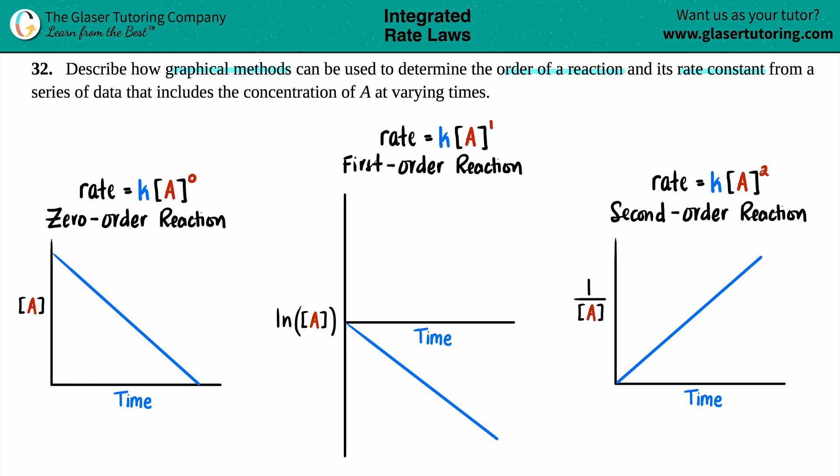By using different types of graphs we can find out a specific order of a reaction and its rate constant. Now generally speaking, if you are using graphs to find out what your order is for your reaction, you are going to know the concentration of a substance, they labeled it as A, at different times. Generally speaking, concentration is molarity.